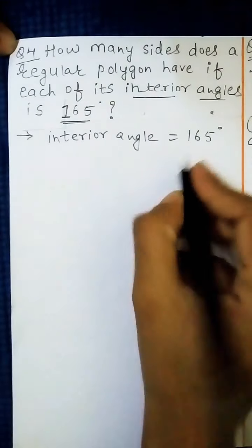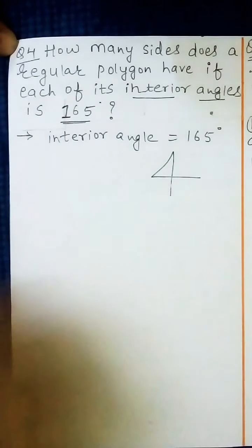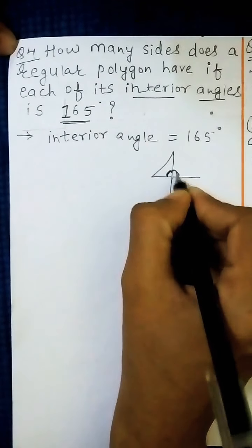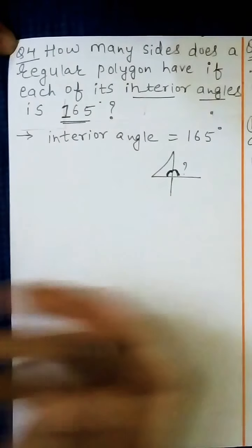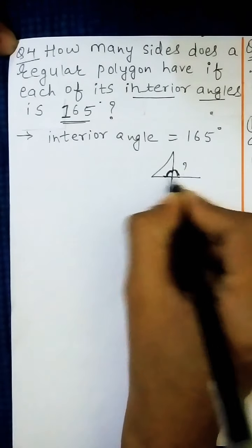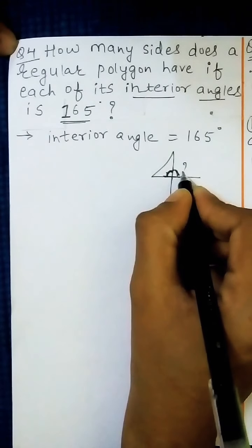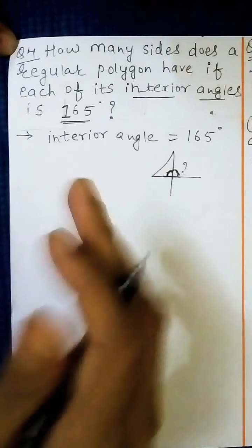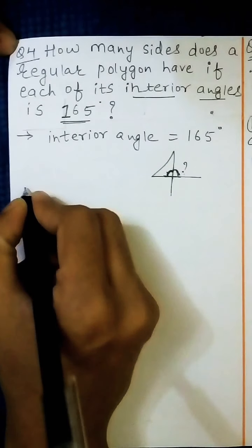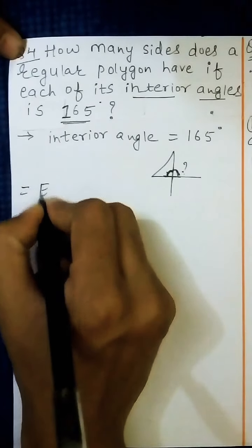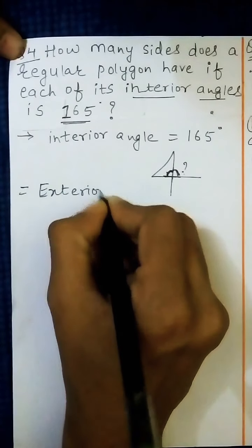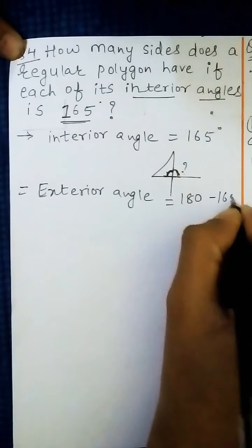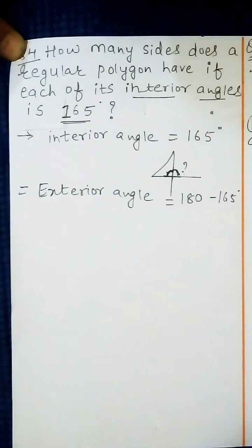Interior angle is 165 degrees. Now in any polygon, if you know the interior angle, you can easily find out the exterior angle, because interior angle and exterior angle both form a linear pair. So since the interior angle is given, we can find out the exterior angle.